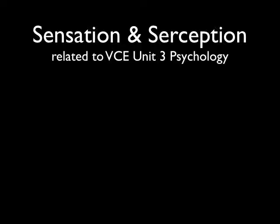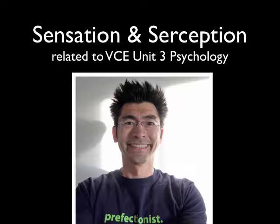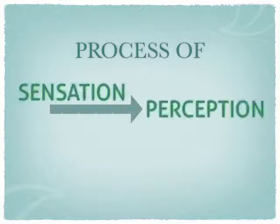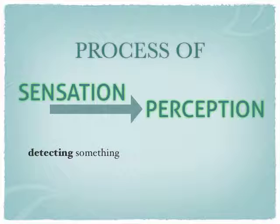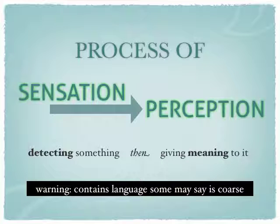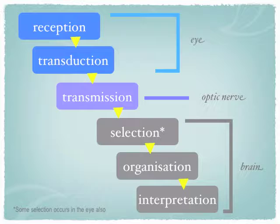Hi, welcome to VCE Unit 3 Psychology Podcast on Sensation and Perception. This is by Andrew Chua. What we want to cover is the process of sensation to perception — detecting something all the way through to giving meaning to it. I have to give you a warning that some language in here may be considered coarse. The process of sensation to perception is covered in seven simple steps.